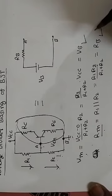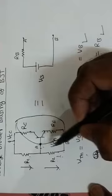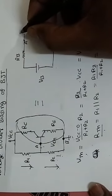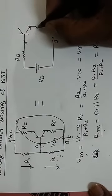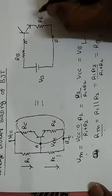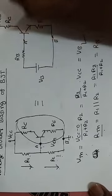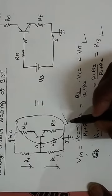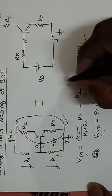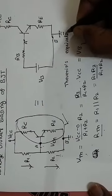Next step होता है कि जो elements हमने remove किये हैं, उन terminals के across हम removed components को दुबारा connect कर देते हैं. तो हमने transistor, RE और RC को remove किया था, इसको हम यहां दुबारा connect कर दे रहे हैं — RE, RC, VCC. इस तरह से voltage divider biasing का Thevenin equivalent circuit हमने बना लिया है.